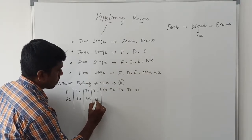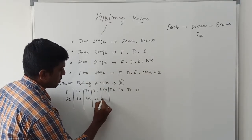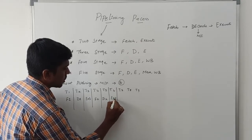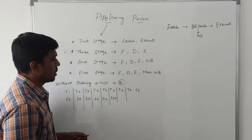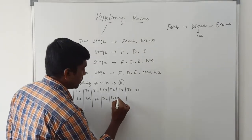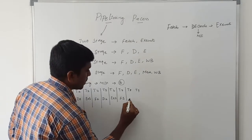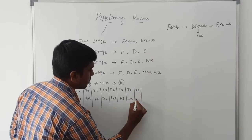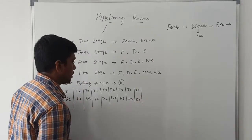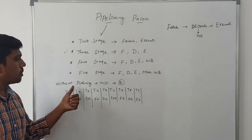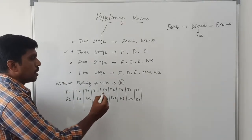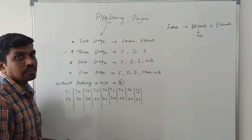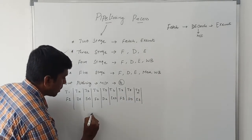During T4 fetch the second instruction, T5 decode, T6 execute the second instruction. Then T7 fetch the third instruction, T8 decode the third instruction, T9 execute the third instruction. So without pipelining, to execute three instructions you need nine time cycles.